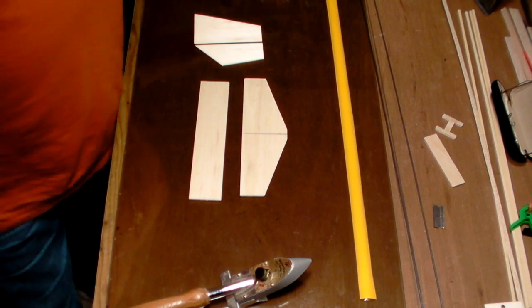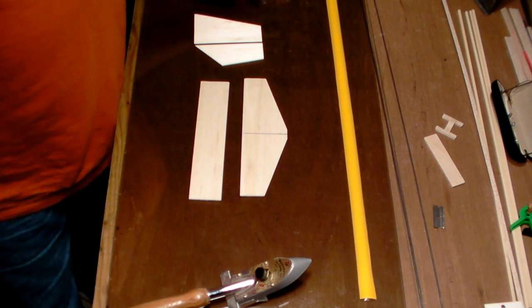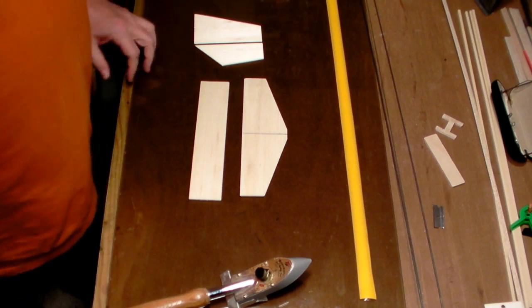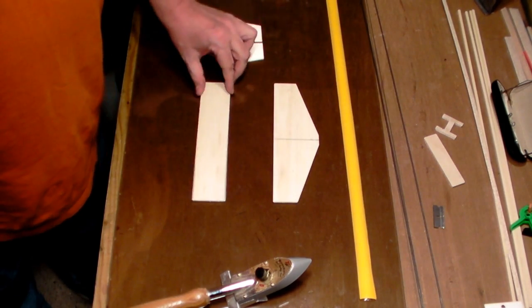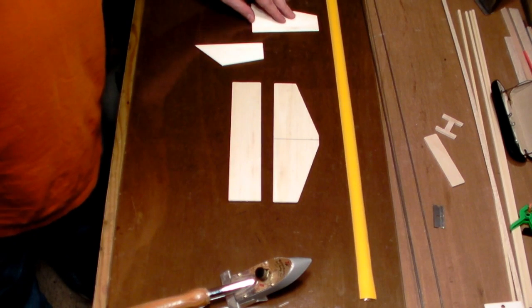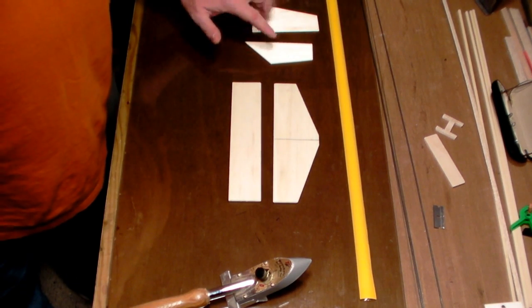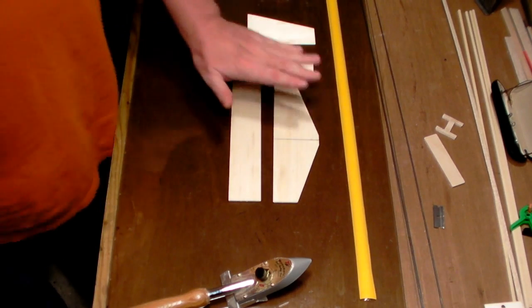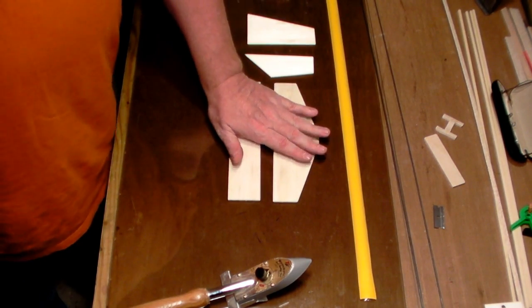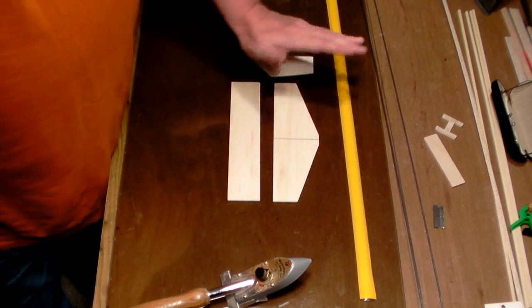The next thing we want to do with our Symbla is build our tail feathers, our tail group for this aircraft. I have the horizontal stabilizer and elevator and the vertical stabilizer and rudder all laying here. There are different ways you can do this. I've got you building this out of 3/32nds balsa.